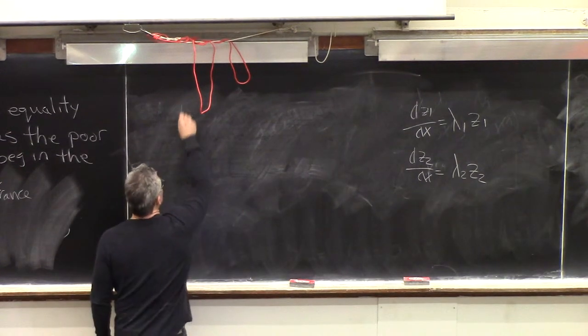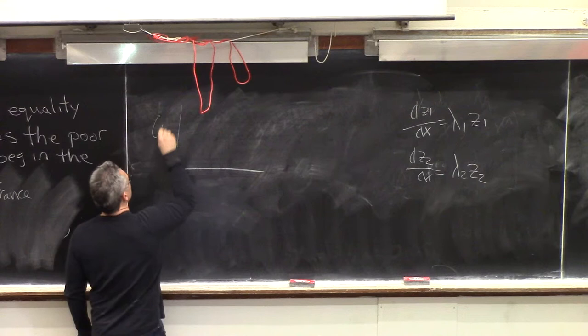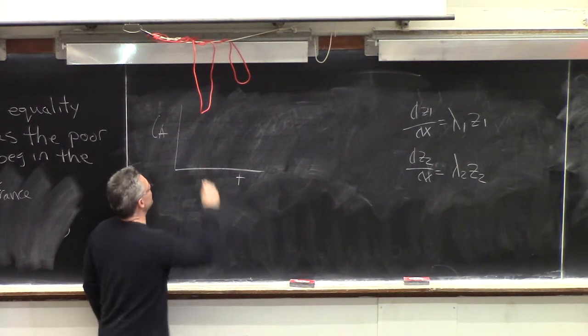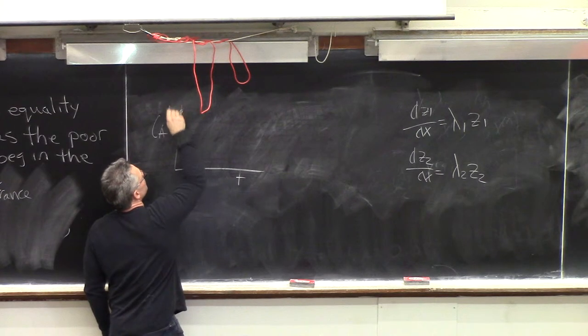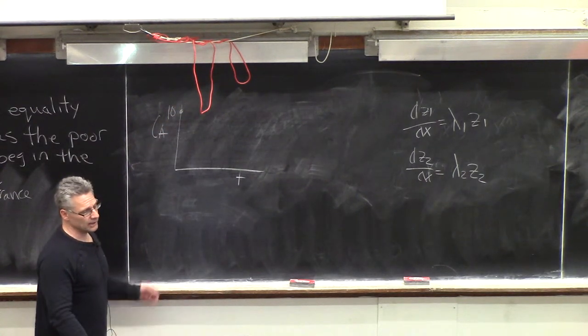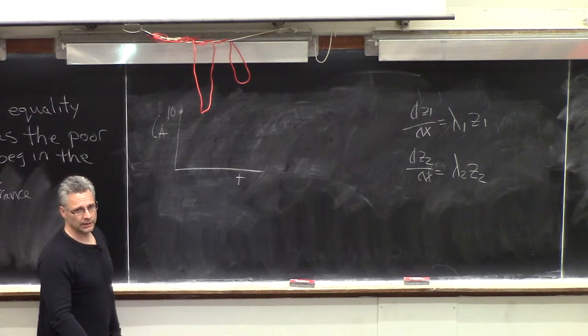So you can see the solution here for CA as a function of time. At t equals 0, it's going to be 10. That's good, because that's what it has to be, because that's the initial condition. If your equations don't satisfy the initial conditions, then you made a mistake.